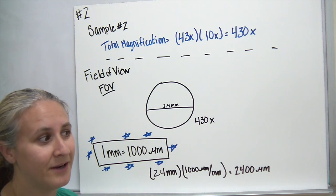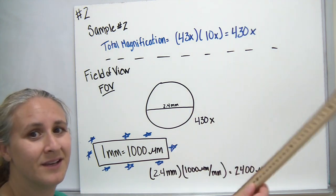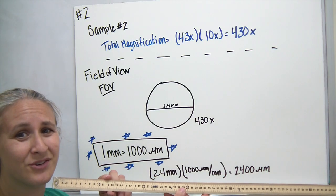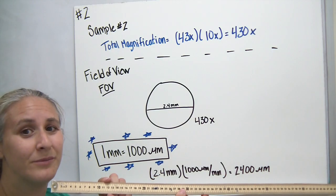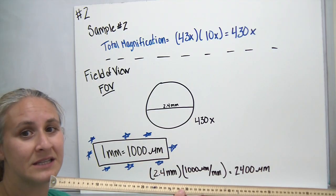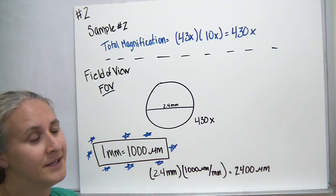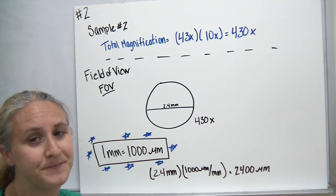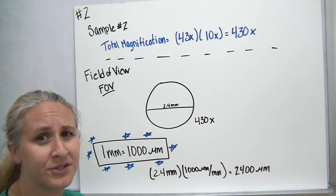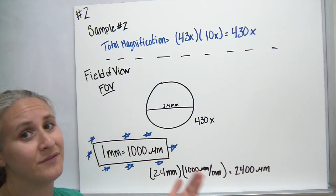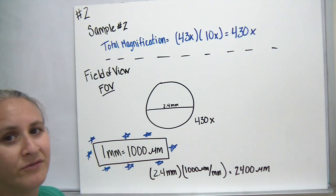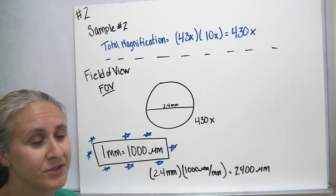If you were to think about how big that really is — if this were my microscope and I needed to measure 2.4 millimeters — it's pretty tiny. Those are the smallest lines on my ruler right here. So one of the things we might do as we're measuring under the microscope is use an even smaller unit than millimeters. We would convert it to something called micrometers.